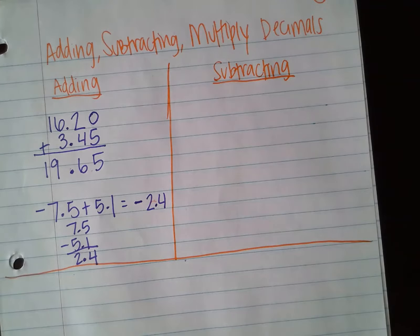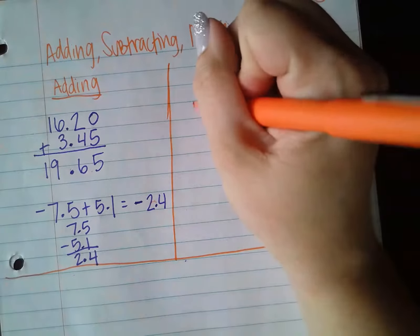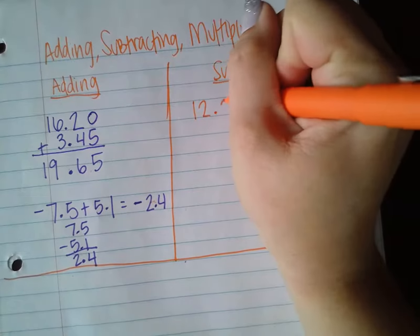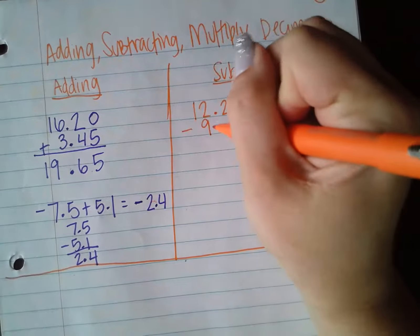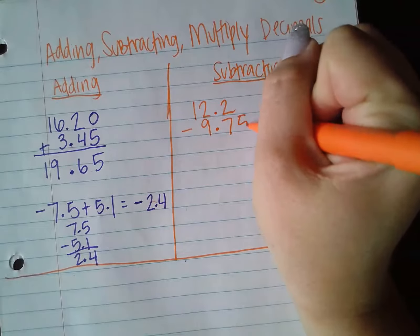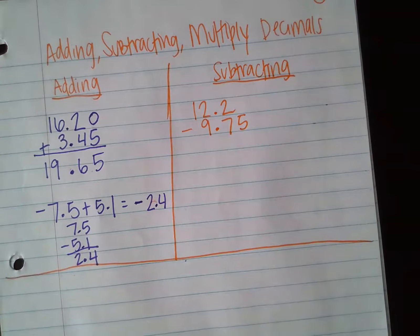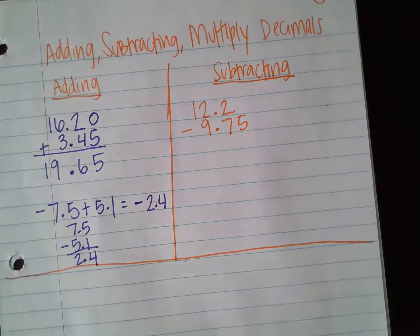So again, we're going to look at two examples. The first example is 12.2 minus 9.75. So 12 and 2 tenths minus 9 and 75 hundredths.